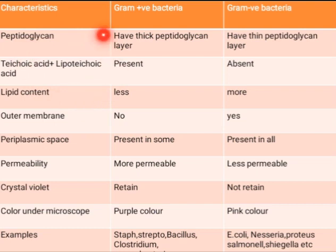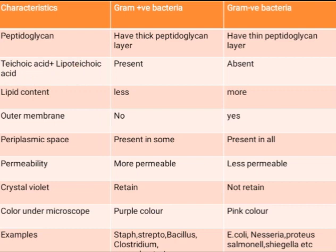Teichoic acid and lipoteichoic acid are present in gram positive bacteria but absent in gram negative bacteria. You can remember this because teichoic acid starts with T and T means true — so gram positive bacteria are always true, meaning teichoic acid is present, while gram negative bacteria are false, meaning it is absent.